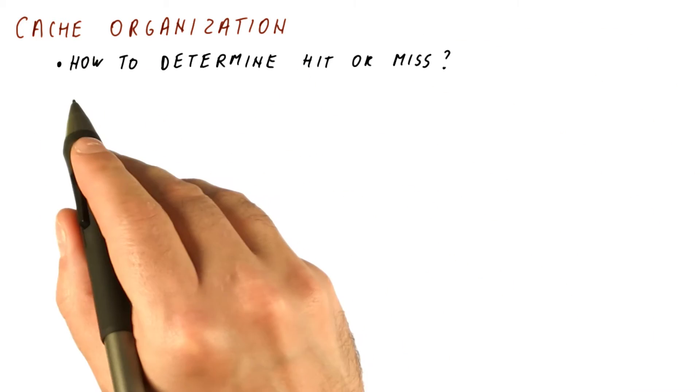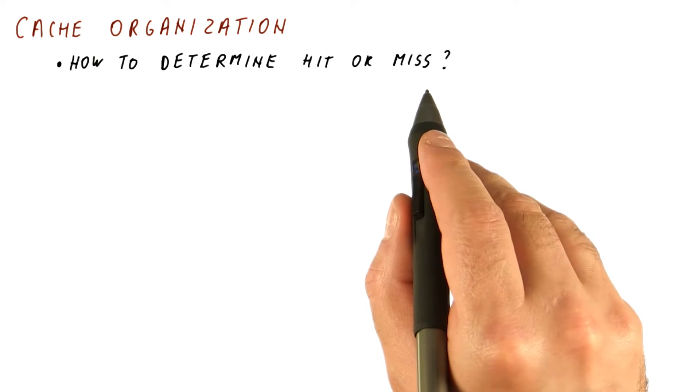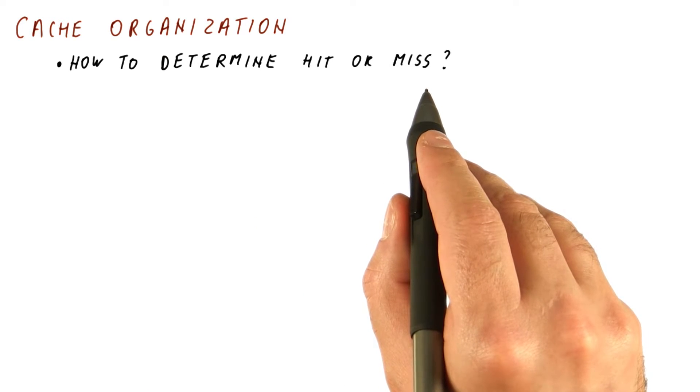The questions we need to ask ourselves is, how do we determine if we have a hit or miss? So we need to know what data we have in the cache. And then when the processor gives us an address, we need to determine whether that data is or is not in the cache, and we need to do that very quickly.